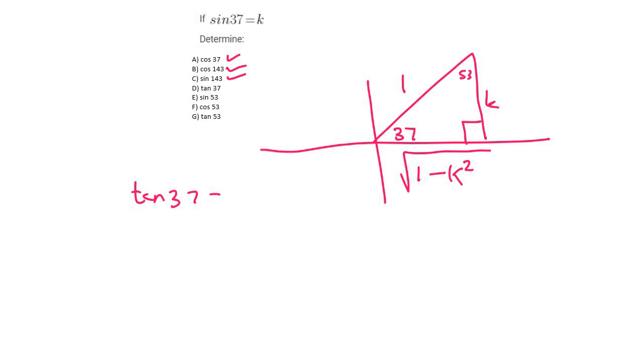Tan 37 is the next question. That's just going to be opposite over adjacent. That's just k over the square root of 1 minus k squared.